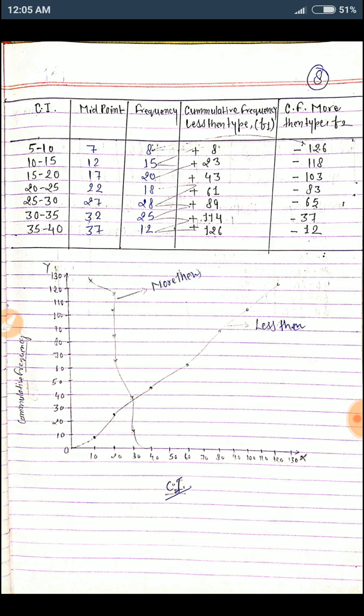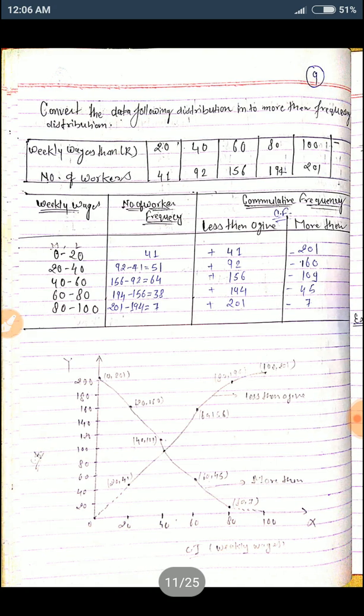Class interval is given, frequency is given. You also find out the CF, cumulative frequency for less than type and more than type. And draw the graph: less than type and more than type. It's called the ogive. And another example of ogive.